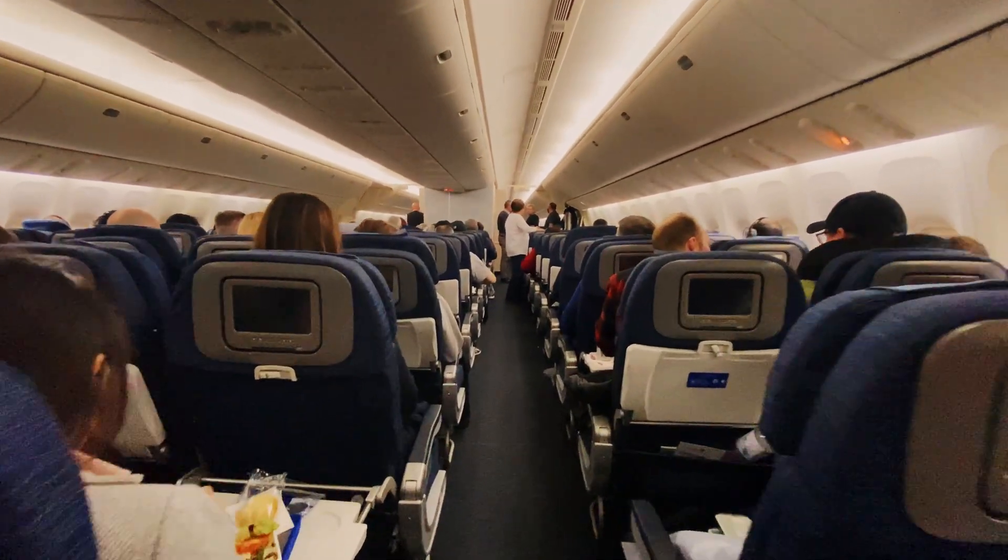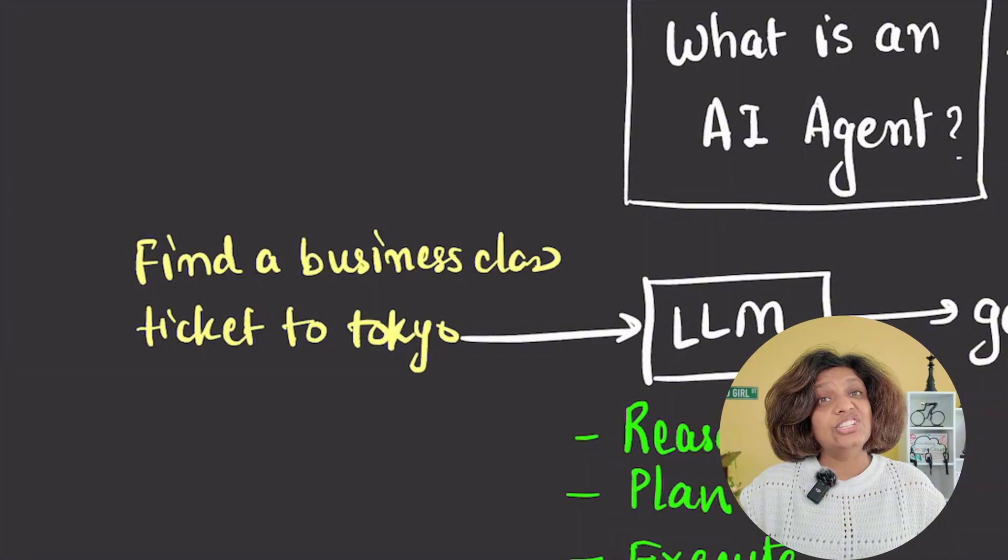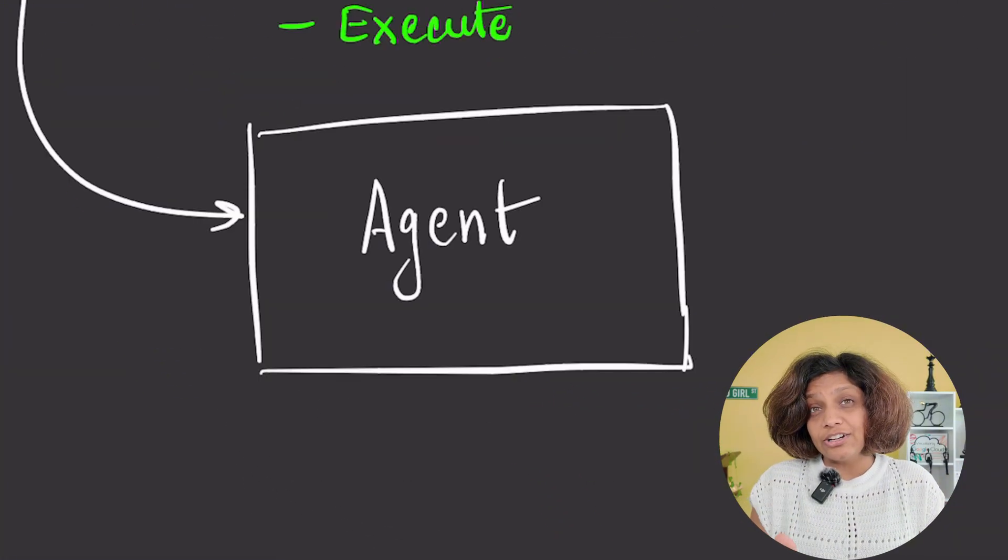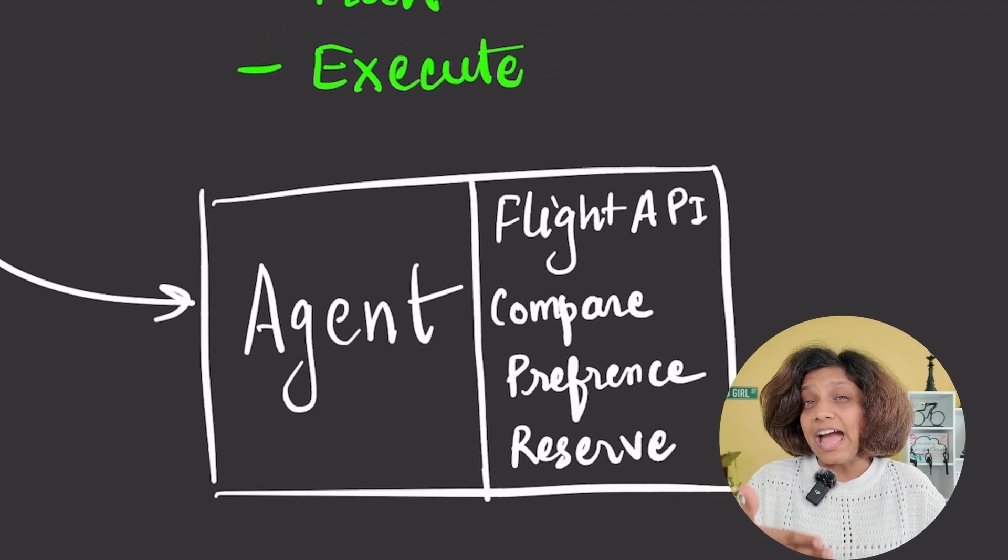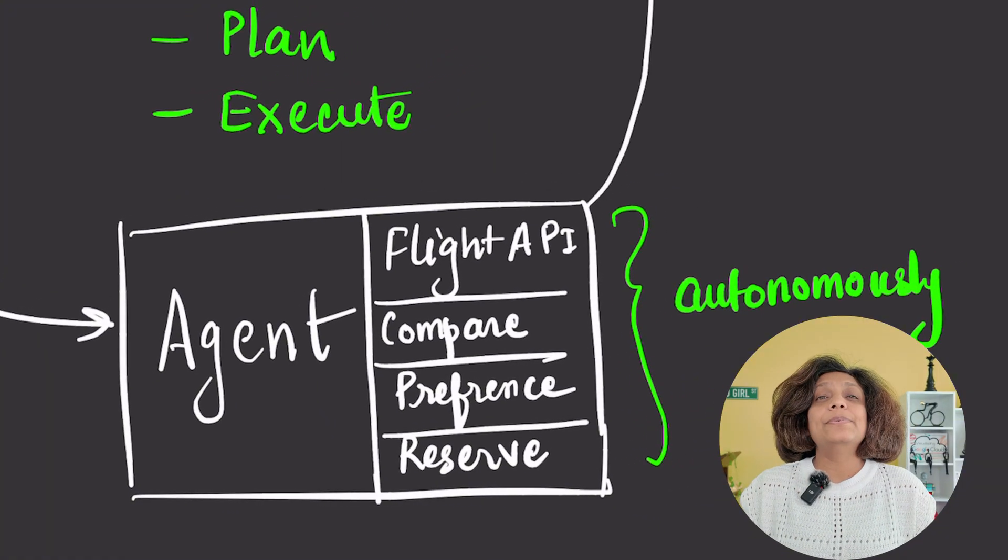Think about booking a flight. If you ask ChatGPT to book your flight, it'll give you instructions on how to book the flight, maybe a list of websites to check. But if you ask an AI agent to book your flight, find me a business class seat to Tokyo next month under $3,000, the agent will actually search for flights, compare options, ask for your preference, and actually complete the reservation for you. All of this happens autonomously within one conversation. That's the power of AI agent.